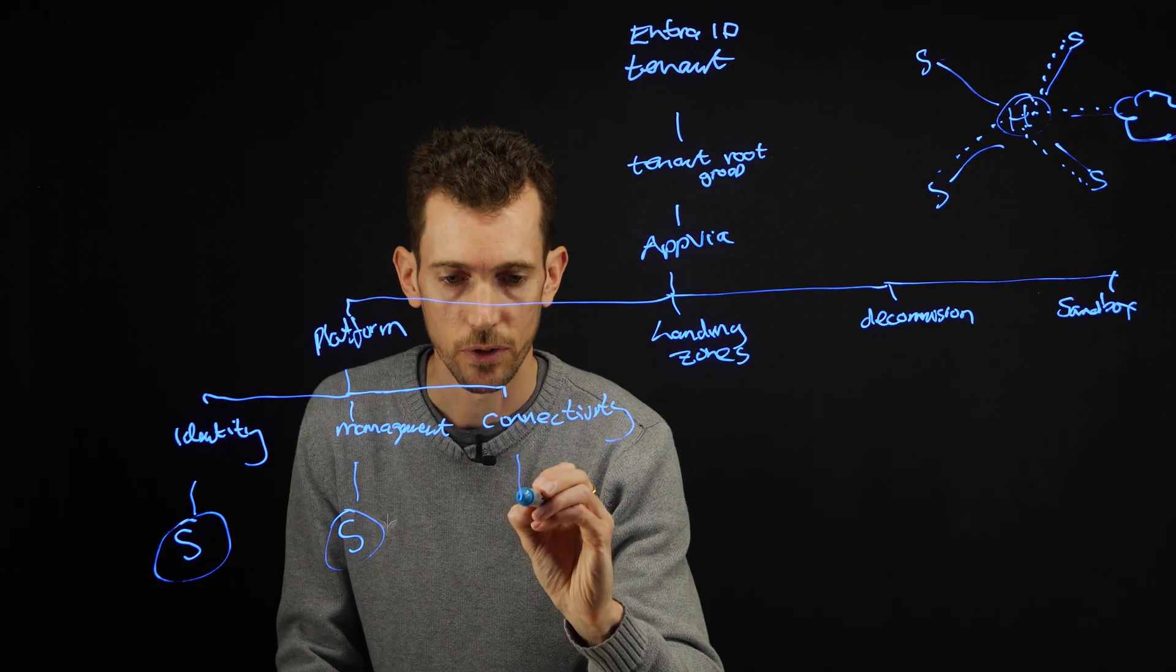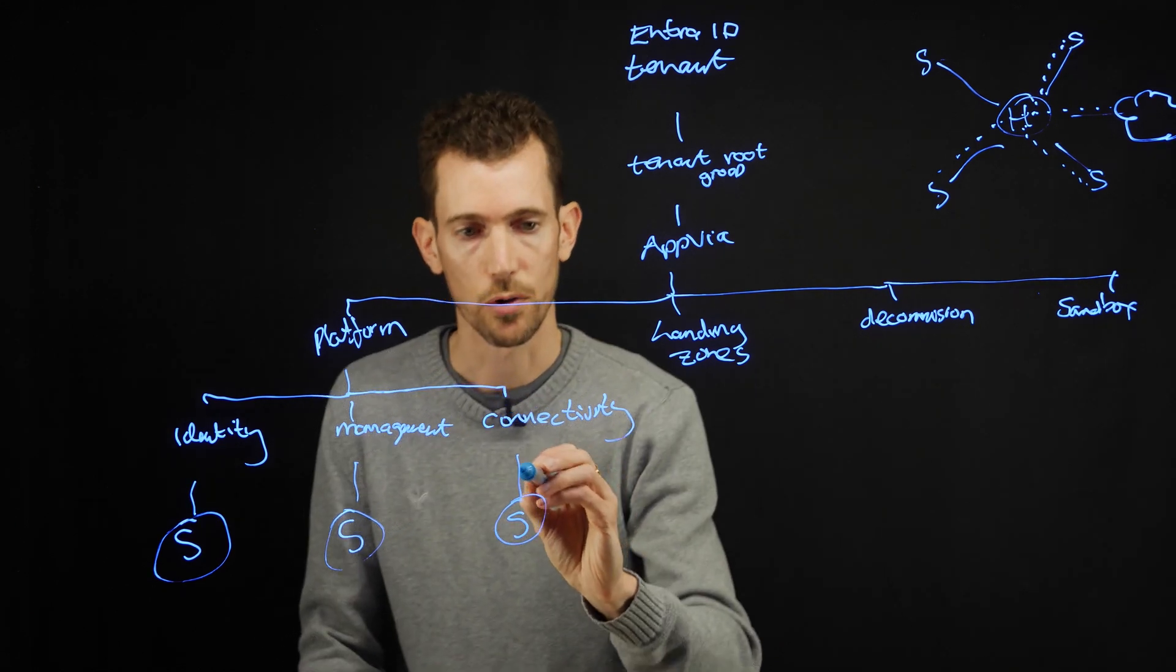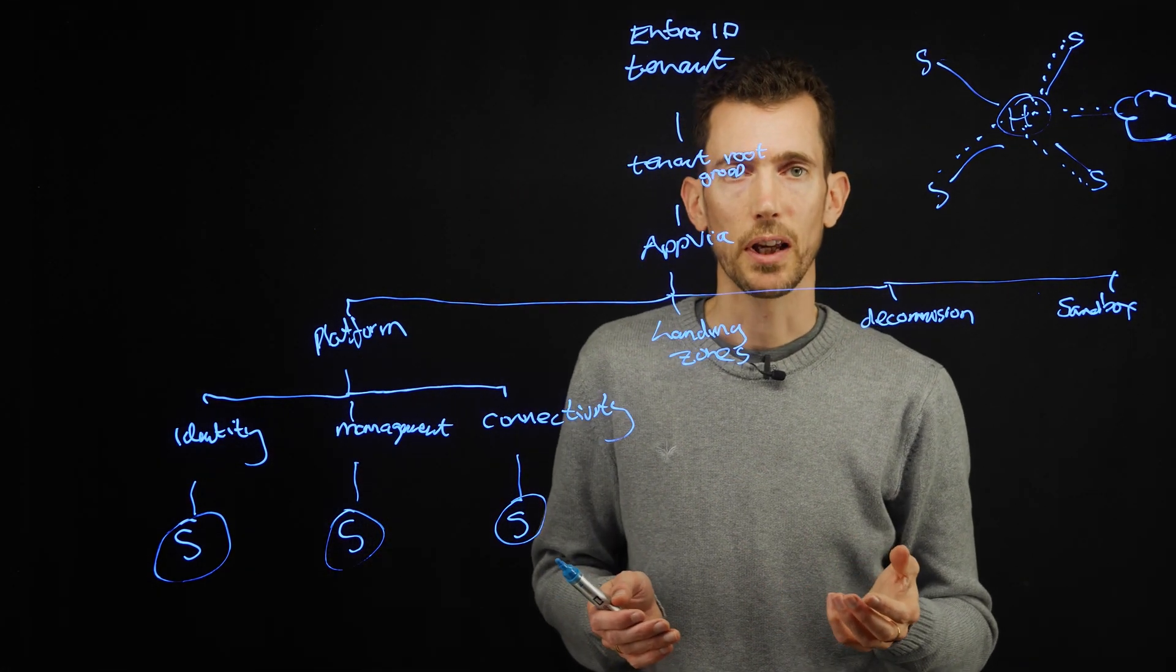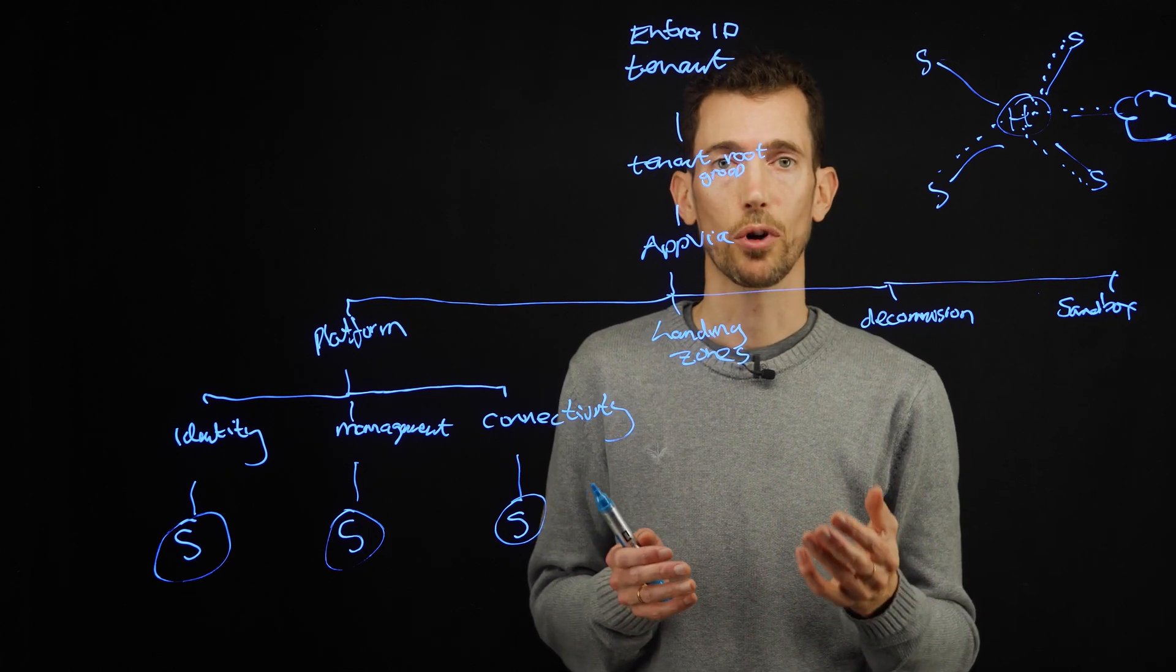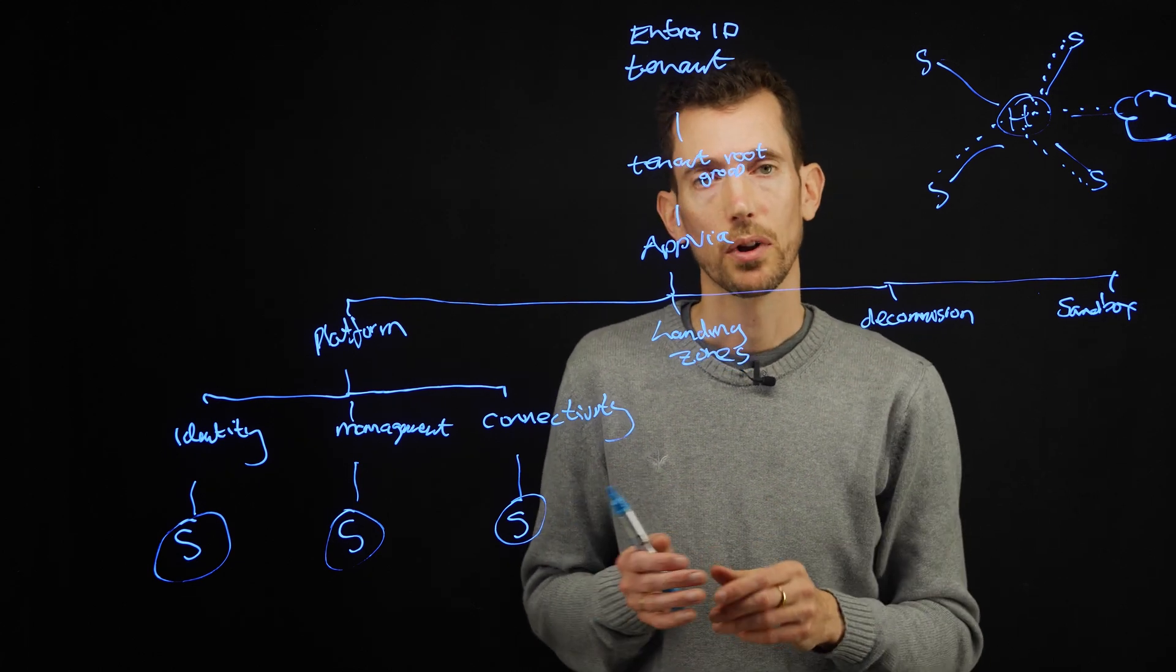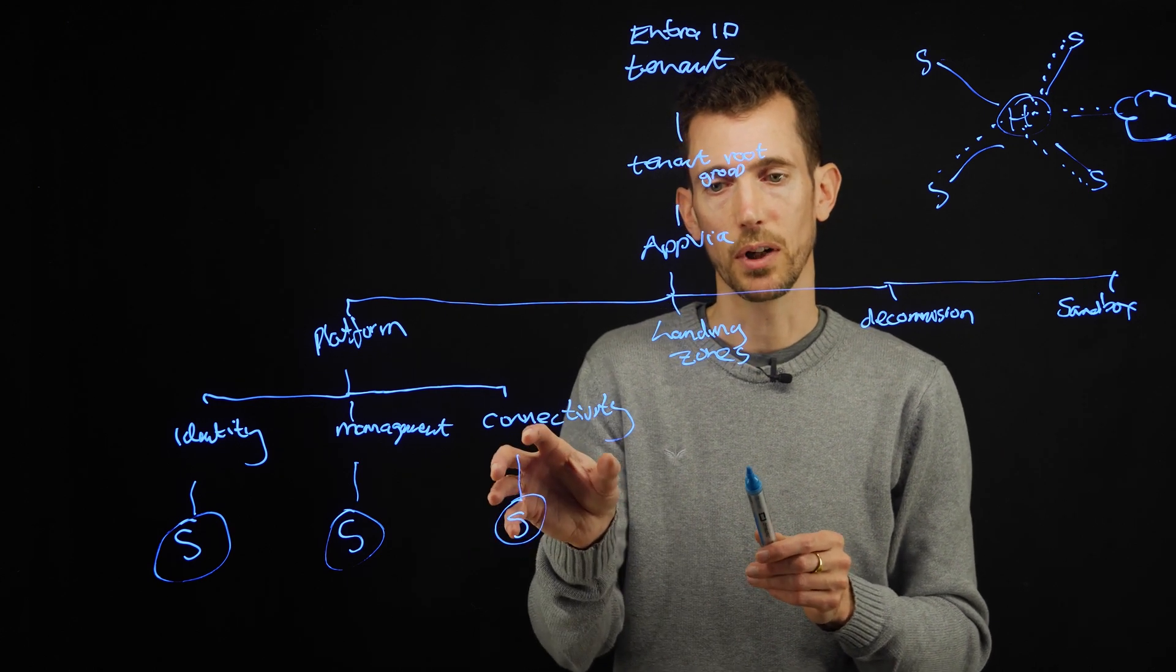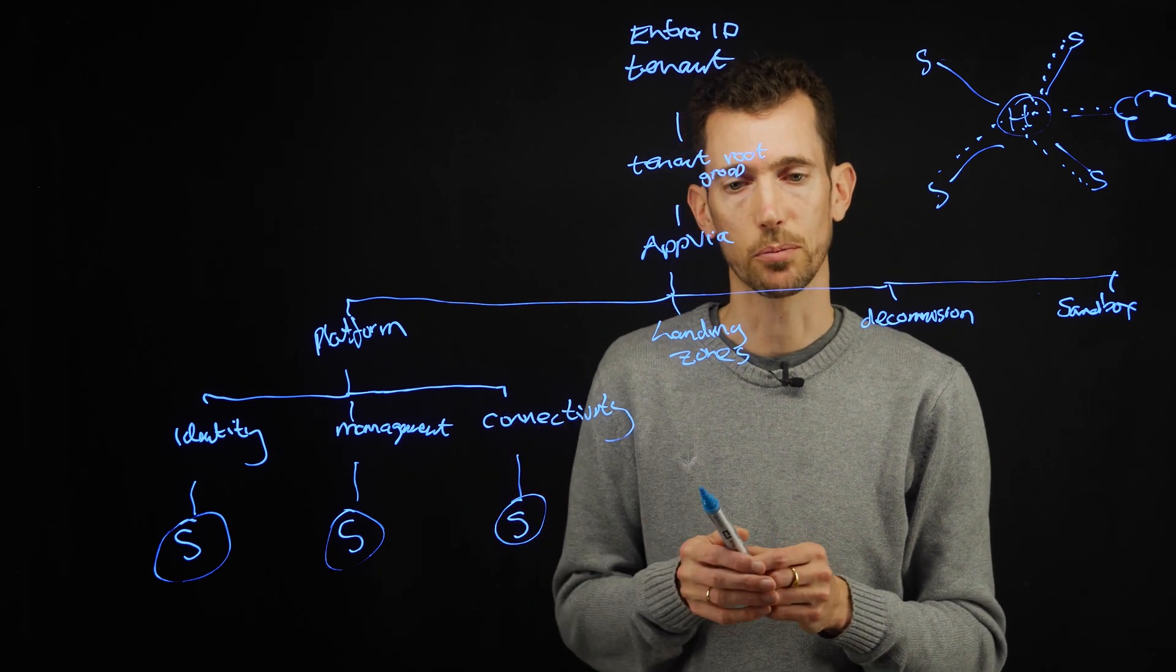Things that might also be in there would be Azure DNS. If you're using things like private endpoints, you'd put your DNS in there as well. So anything to do with networking would live within the connectivity subscription.